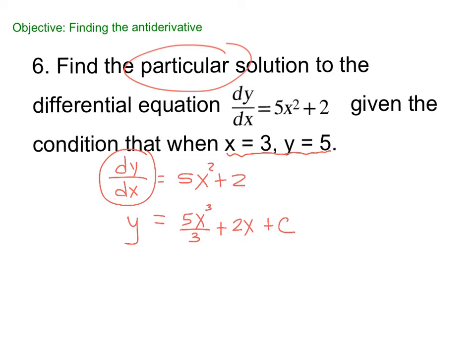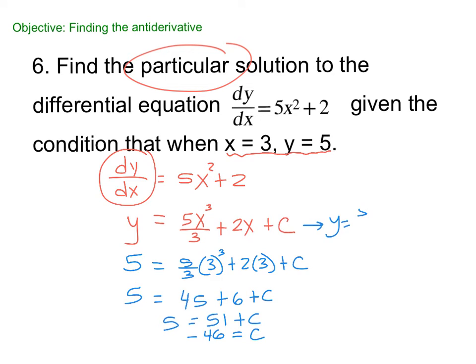But now this one wants our particular solution. So we're going to use this information they gave us to solve for C. So they gave me that y is 5. So 5 equals 5/3 times my x value is 3 cubed, plus 2 times 3, plus C. So let's see. We get, that's 45. 9 times 5 is 45, plus 6, plus C. So this is 51. So C is negative 46. So my final answer, y equals 5/3 x cubed, plus 2x minus 46. And that's the final answer. And if you ever want to check your work, you could always take the derivative, see what you get.